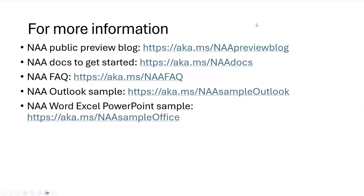For more information about this, go check out the public preview blog. That top link there has basically the same information I'm talking to you about today. If you know someone who needs this, send them that link. There's also some docs for getting started which have the code that I was just showing. There's also a frequently asked questions list. The Outlook sample link is here — if you want to go check that out, that's a great spot to see how NAA works. There's also, if you're working with Word, Excel, or PowerPoint, there's a sample for that as well.